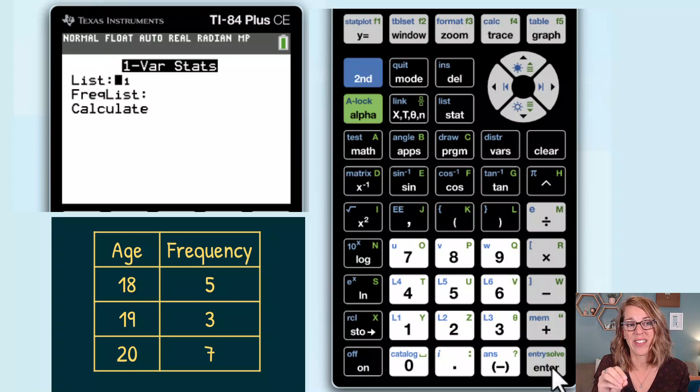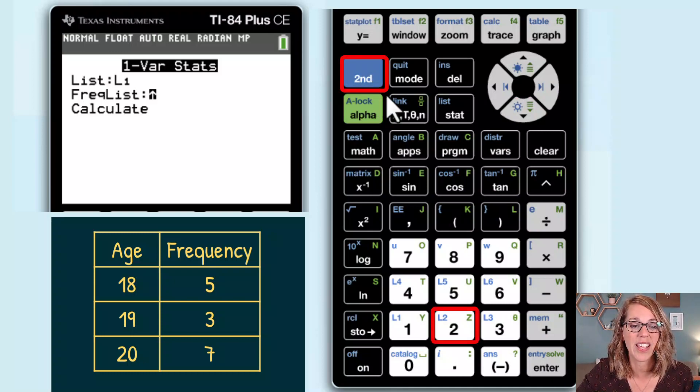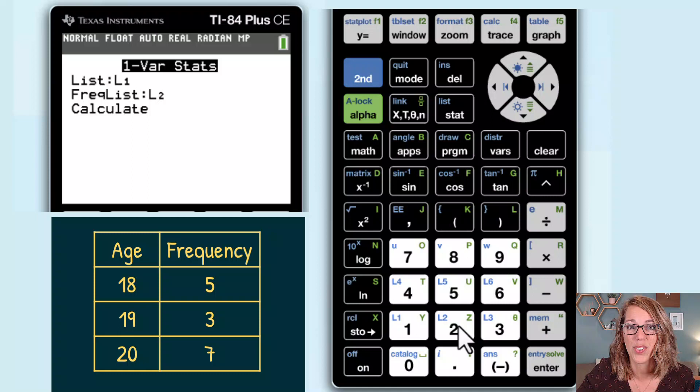My age was in list one. That's my data. So I'm going to leave this as L1. I'm going to arrow down and I'm going to choose L2. To get to L2, I'm going to do second followed by the number two. So you can change the lists here by just doing second followed by the number of list where your data lives.